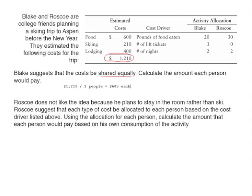Roscoe may not think this is fair because he plans to stay in the room and not ski. So Roscoe suggests that each type of cost be allocated to each person based on the cost driver listed — in other words, using activity based costing. We'll calculate the amount each person pays based on his own consumption of each activity.